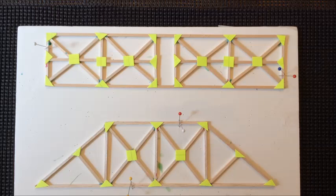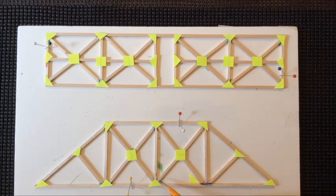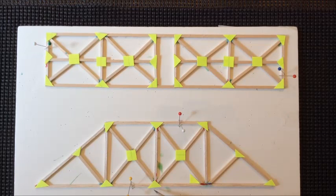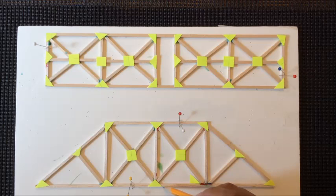If you have a gusset sticking out of the bridge itself, then we're going to end up with uneven edges here. So we want to try to keep all your gussets to the inside of this edge here.